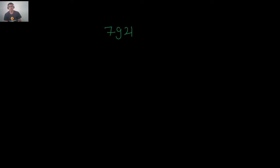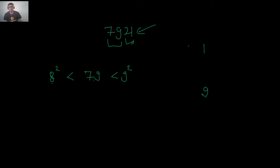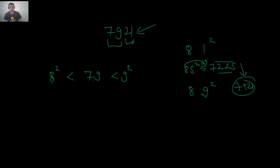Let us find √7921. Split: last two digits = 21, remaining = 79. Since it ends in 1, the square root ends in 1 or 9. Since 79 lies between 8² = 64 and 9² = 81, the square root lies between 80 and 90. Check 85²: 8 × 9 = 72, appended with 25 = 7225. Since 7921 > 7225, the square root is greater than 85. So the answer ends in 9, giving √7921 = 89.